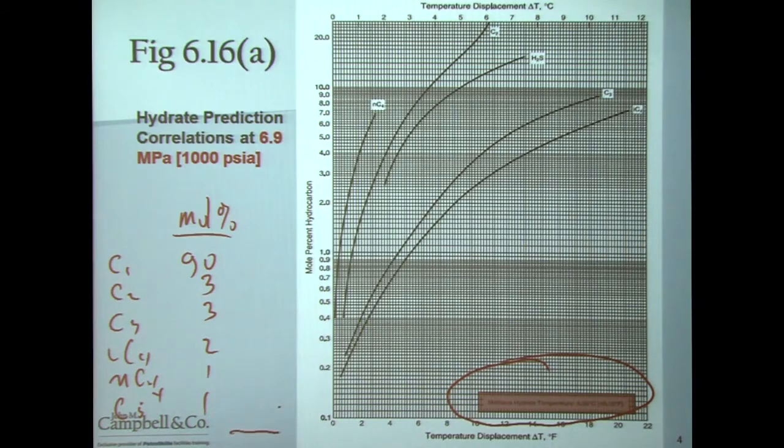Given this composition and this pressure of 69 bar, we can figure out the hydrate formation temperature at this particular pressure. It all starts with the methane hydrate formation temperature — this is called a temperature displacement method. At each pressure you will see a different value for the methane hydrate formation temperature. Because we're dealing with 69 bar, we start by filling in the table. The methane hydrate formation temperature, given in the lower right-hand box, is 9.5 degrees Celsius.